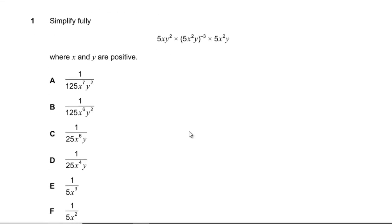Question 1: Simplify fully 5xy² times (5x³y)² times 5⁻¹x⁻⁶y where x and y are positive. For x we've got 1, then -6, so we've got x². For y we've got 2, -3, and 1, so that just disappears. For the 5s we've got 1, -3, and another 1, so we've got -1. That gives us 1 over 5x³, which is E.